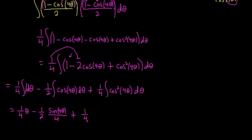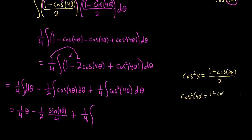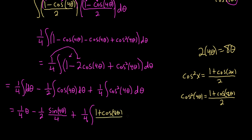For the third integral we use the cosine-squared identity: cosine squared x equals 1 plus cosine 2x over 2. Since we have cosine squared of 4 theta, we replace x with 4 theta, giving 1 plus cosine of 8 theta all over 2. So the third integral becomes 1 fourth times the integral of (1 plus cosine 8 theta) over 2, d theta.